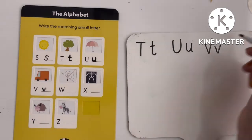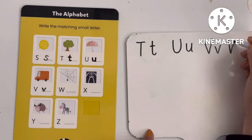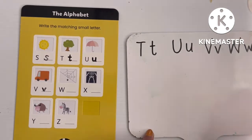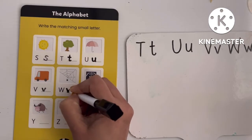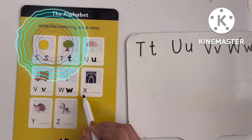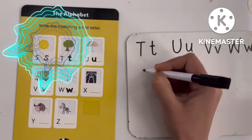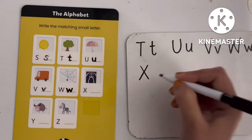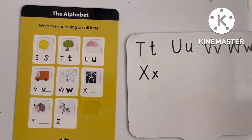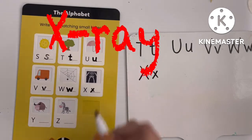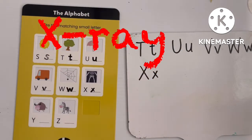Next, W. This one is capital W, and in lowercase we write like this — W means web. Next, X. This is capital X, and this is small X — in small X it looks like this. X means X-ray.